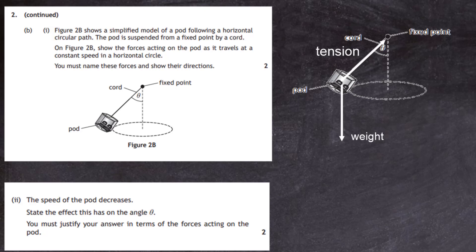For two marks, just state the two forces: weight acting vertically downwards, and tension due to the cord. Some people suggest putting in the centripetal force — never do that. The centripetal force is not a separate force you label; it's caused by the tension in the cord in this situation.